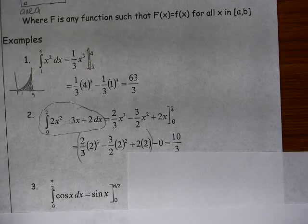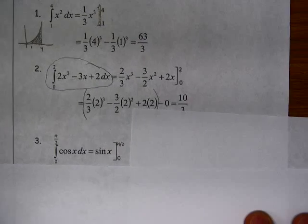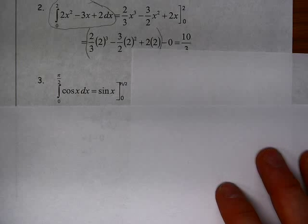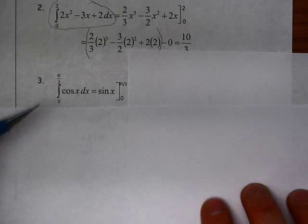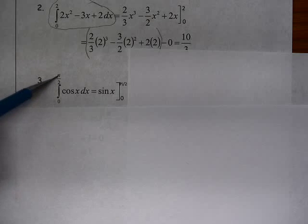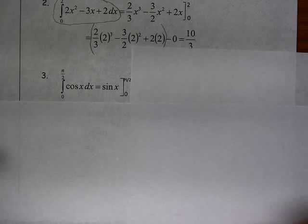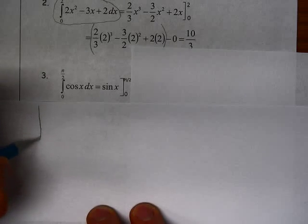And the last one, so that we can take a look at a trigonometric example, we want to find the definite integral from 0 to π over 2 of the cosine of x. So again, keep in mind what we're looking for here is,